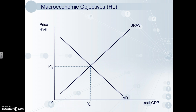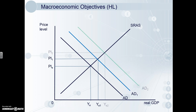With an increase in aggregate demand — AD to AD1 and AD1 to AD2 — the price level increases while the unemployment rate decreases. This gives the shape to the Phillips curve. When inflation is higher, unemployment is low, and when inflation is low, unemployment is higher.